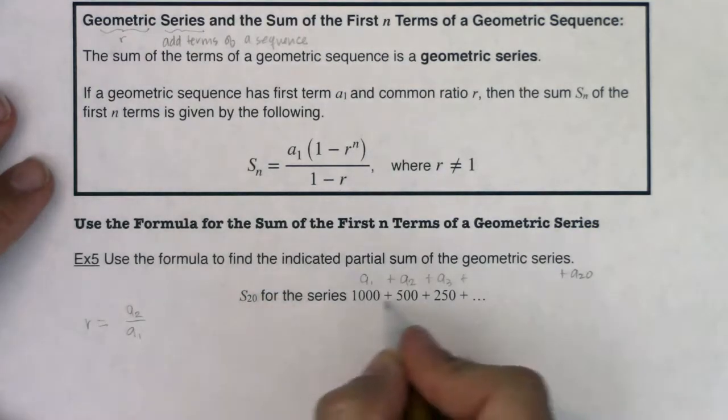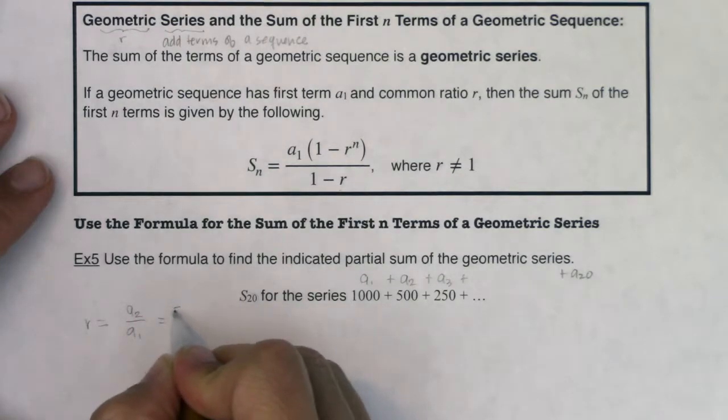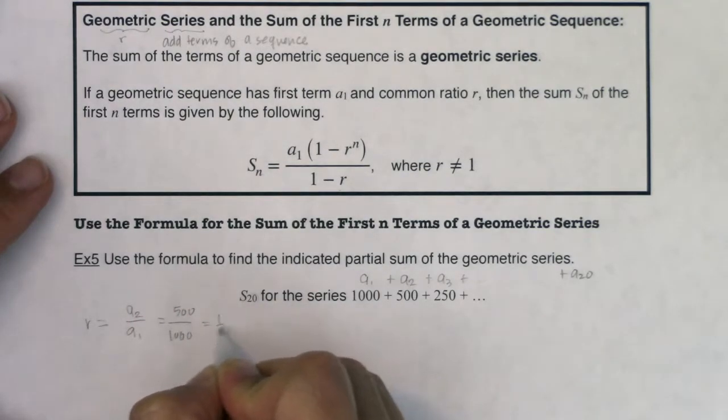Well, you can take any two terms and put them in ratio as long as it's the more recent term in ratio to the preceding term. So I'll look at a sub 2 in ratio to a sub 1. I get 500 over 1,000, or my r value is 1 half.